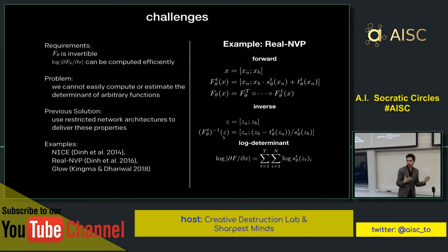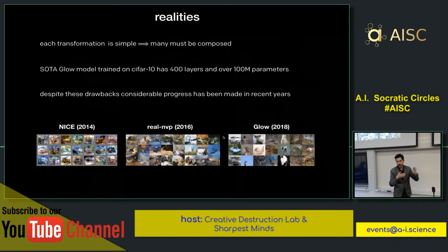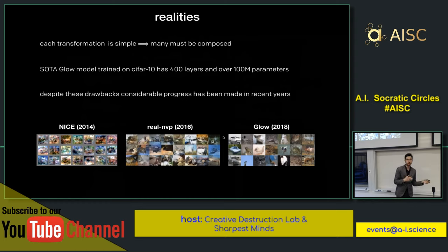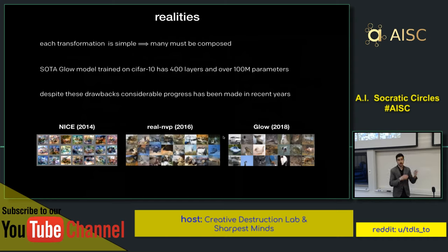We're only transforming half of the dimensions at every step. To model high-dimensional, complex, rich datasets well, we apply many of these transformations composed together, swapping the permutations of the features. The state-of-the-art model in this class is GLOW, and on CIFAR-10 this model has over 400 layers and about 100 million parameters — compare that to a variational autoencoder or GAN performing comparably on this dataset, which might have 1% or fewer parameters and much less computation to sample from.